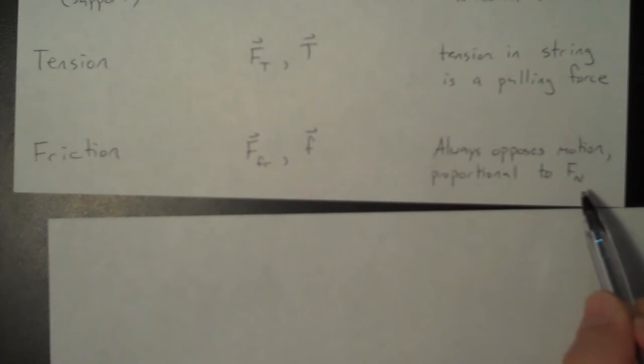Friction always opposes motion. And it turns out that it's actually proportional to the normal force. Because what is the normal force? It's the force, that support force holding an object up. Well, friction is a contact force. And you can probably imagine that the stronger the normal force, the more the two surfaces are pressing against each other. So the stronger the contact force is, and thus the friction is going to be stronger as well. So that should really come as no surprise that it's going to turn out that friction is proportional to the normal force.